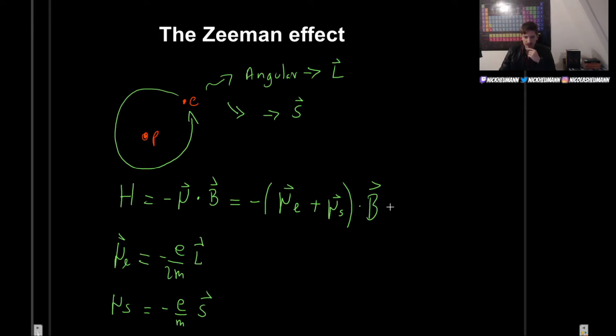So these are our two quantities. So we can actually just go ahead and insert it in here. So we get, well, the minus signs will all cancel out. So we get simply plus E over 2m times L and then plus E over M times S and all of this dotted with the magnetic field. And let's now finish this up.